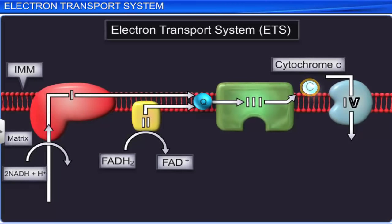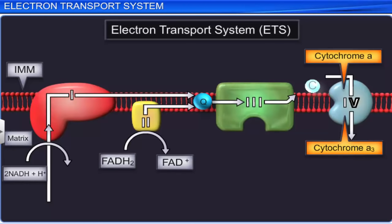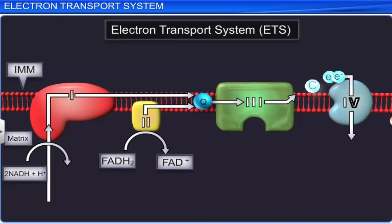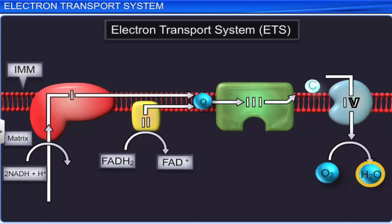Cytochrome C is a mobile carrier attached to the inner membrane of the mitochondria and helps in the transport of electrons between complex 3 and complex 4. Complex 4 contains cytochrome A and cytochrome A3. It transfers the electrons to the final electron acceptor, oxygen. Oxygen, on receiving the electrons, reacts with 2H+ ions and reduces to water, thereby driving the ETS. This reaction can be summarized as: 2H+ + 2e- + half O2 results in H2O plus energy.